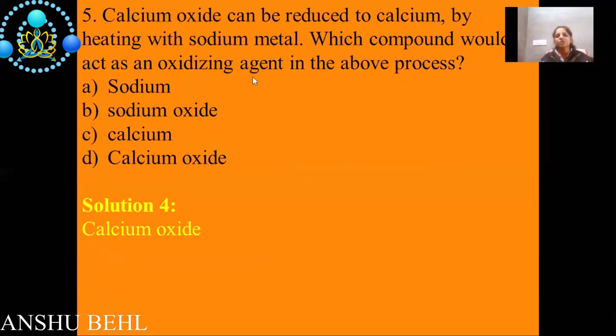Fifth question: Calcium oxide can be reduced to calcium by heating with sodium. Which compound would act as oxidizing agent? Here you will write reaction like this: calcium oxide plus sodium gives you sodium oxide plus calcium. Calcium oxide is combining with sodium to form sodium oxide. So sodium is getting oxygen from calcium. Calcium oxide acts as oxidizing agent in this reaction. So option D, that is calcium oxide, is correct answer.